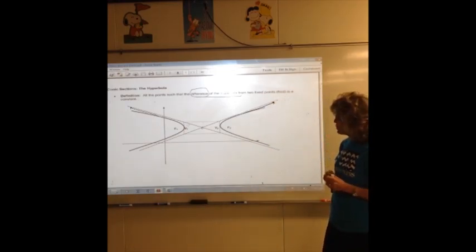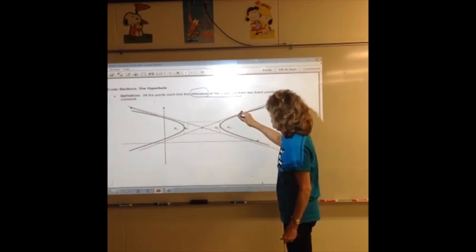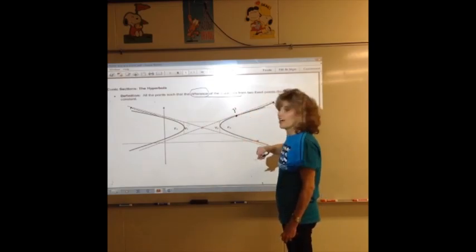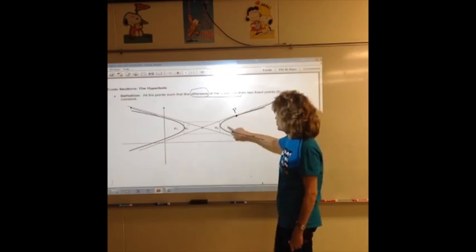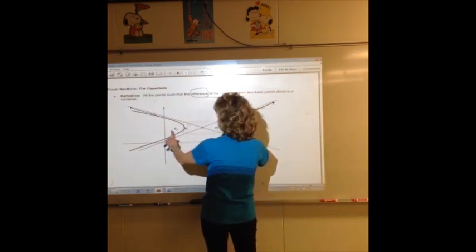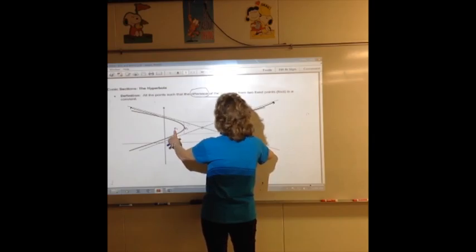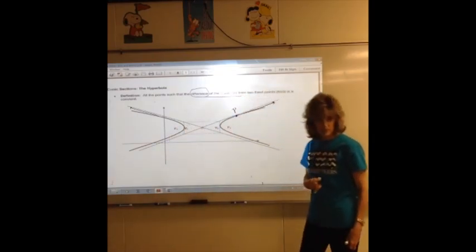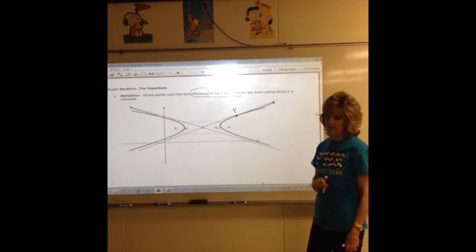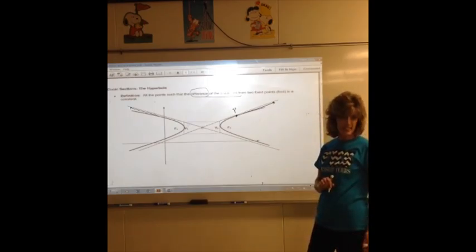The definition is, if I pick a point, I'm going to call this point P. If I pick a point that's on one of the branches and I measure from point to focus and point to focus, I'll have a distance that's big and a distance that's small. If I subtract big minus small, I'll get some number. I don't know what it is. I'm going to make it up and say it's 10.